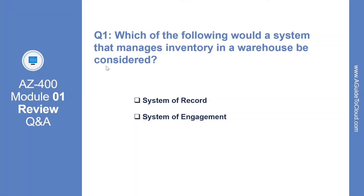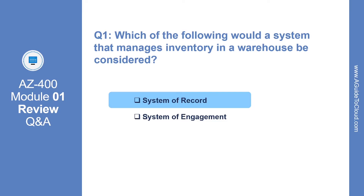So let's look at the first question. Which of the following would a system that manages inventory in a warehouse be considered? The correct answer is system of record. Systems that are providing the truth about data elements are often called systems of record.